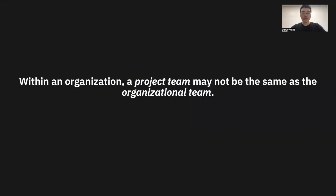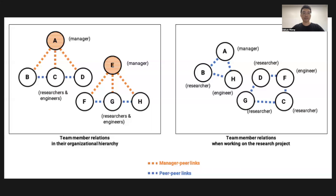We have this observation that within an organization, a project team may not be the same as the organizational team. Let's take a look at this illustration. To the left, this is a typical organizational hierarchy where you have two organizational teams — Manager A and Manager E — each managing three employees reporting to them. So these are two organizational teams.